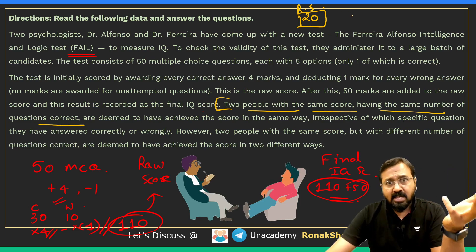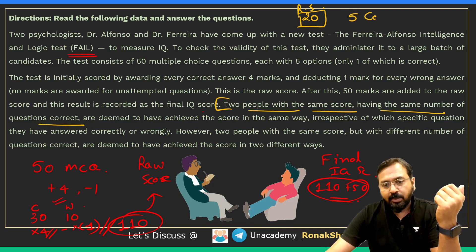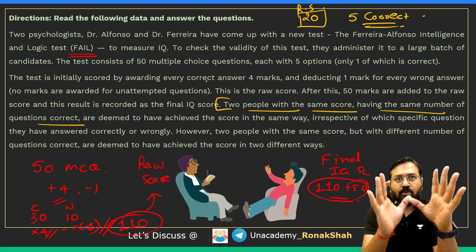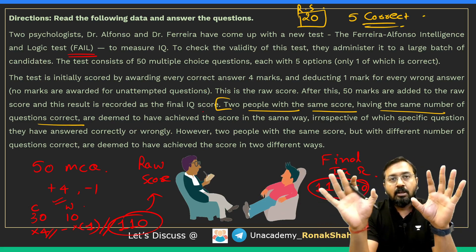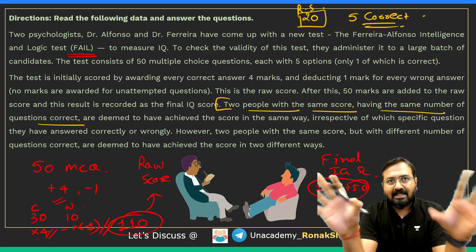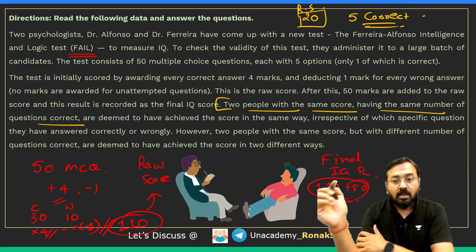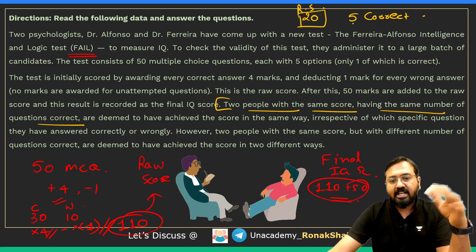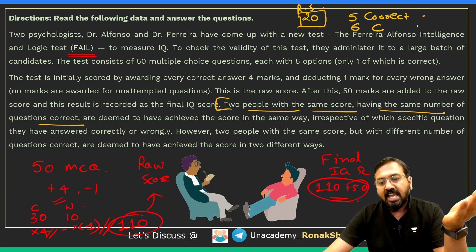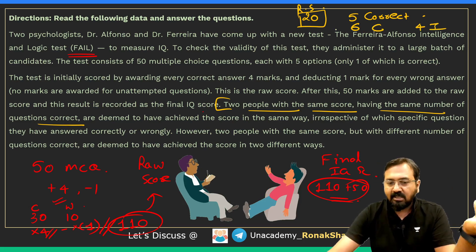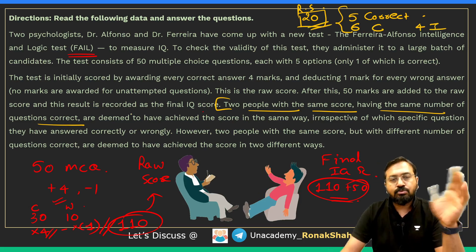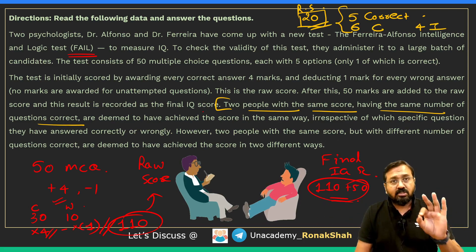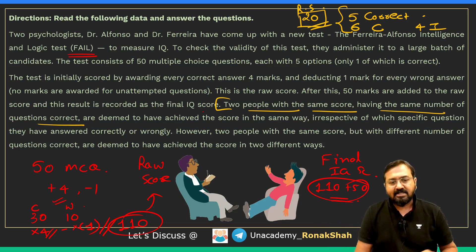For example, a raw score of 20 marks can be obtained by answering five questions correctly with no incorrect answers. It doesn't matter which five questions you answer correctly — three students who answered five questions correctly have all got the score in the same way. But if one student answered five correct and none incorrect, and another answered six correct and four incorrect, both get a raw score of 20, so these two students obtained the score in different ways. That's the main trick of this question.